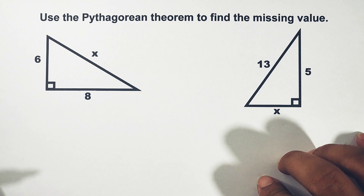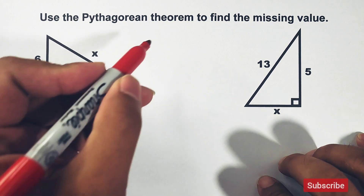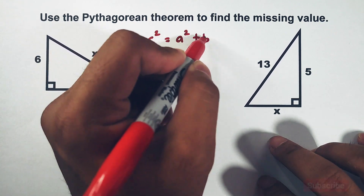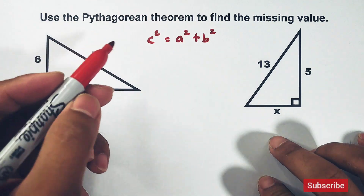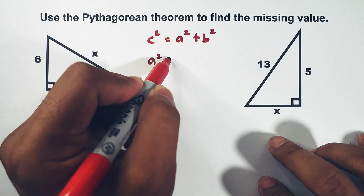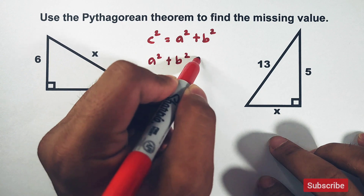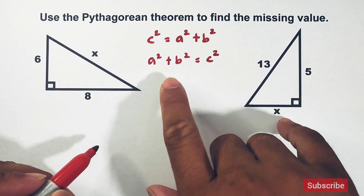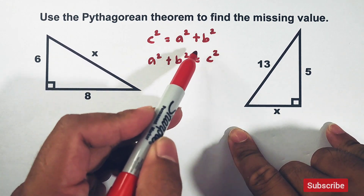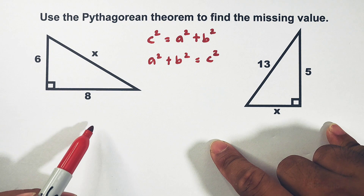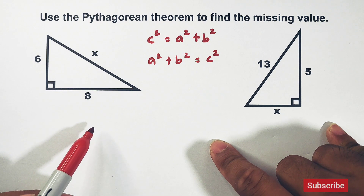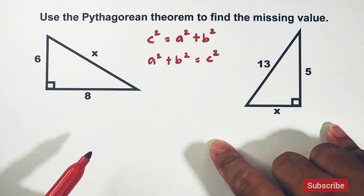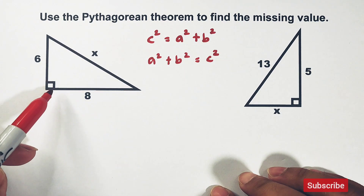To find the value of x we will use the Pythagorean theorem: the sum of the squares of the two legs is equal to the square of the hypotenuse. You can use the formula c² = a² + b², or equivalently a² + b² = c². Here, a and b represent the lengths of the legs of the right triangle, while c represents the length of the hypotenuse. So here in this first triangle...